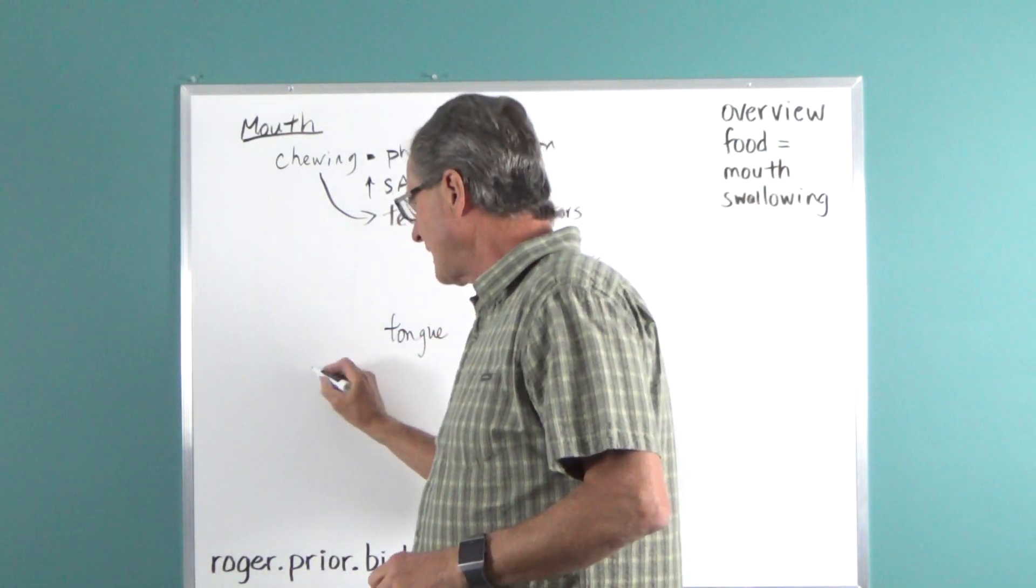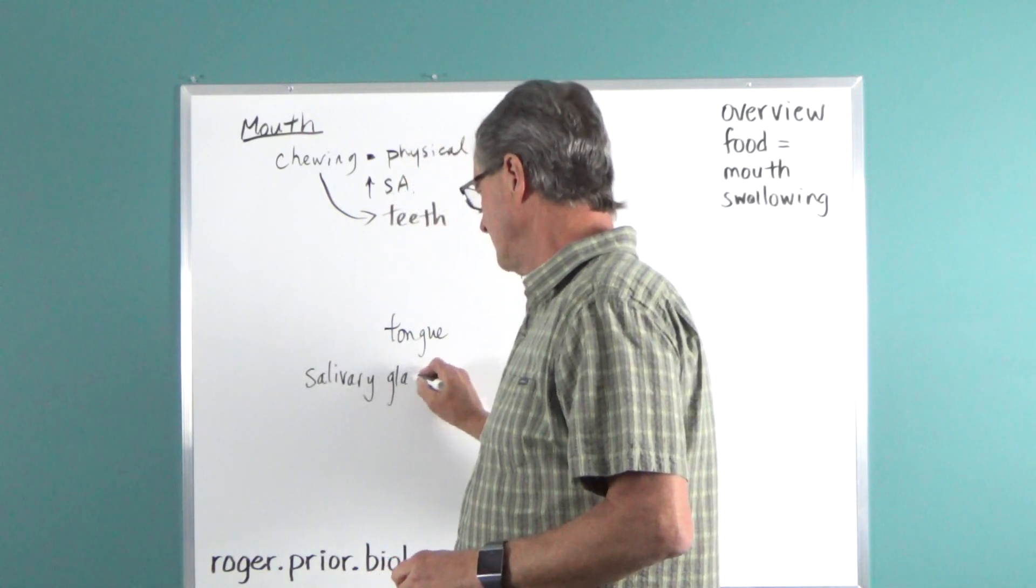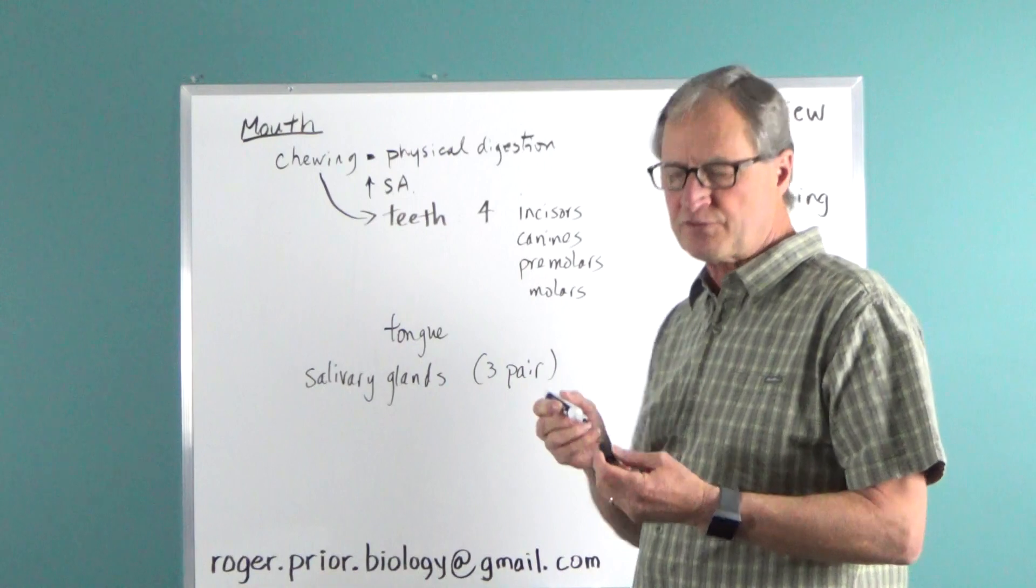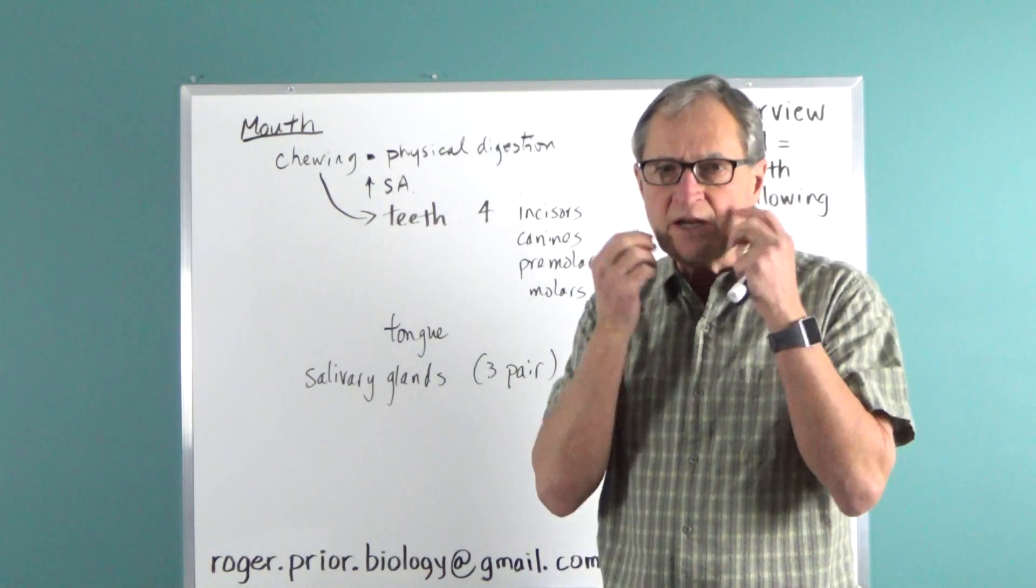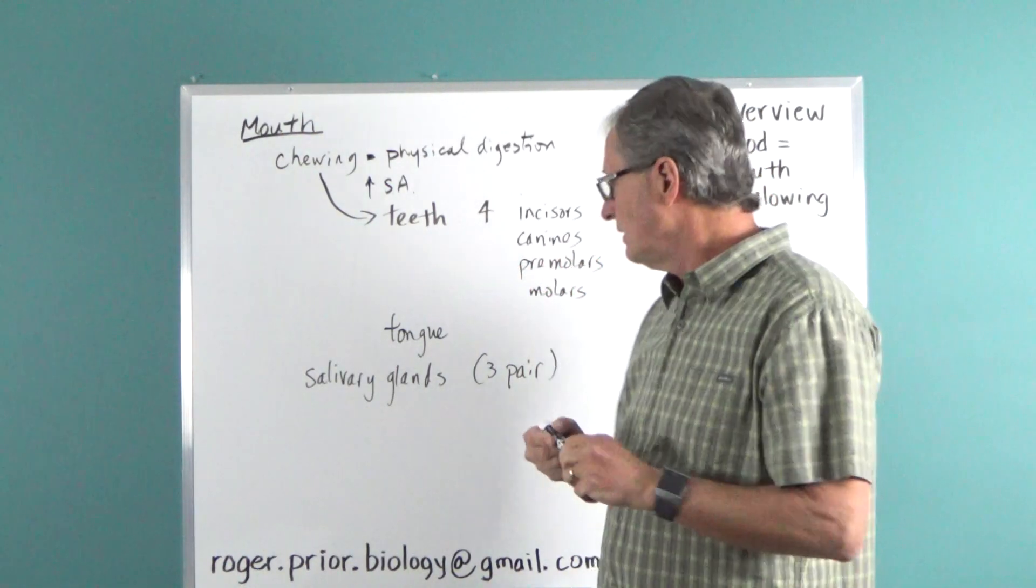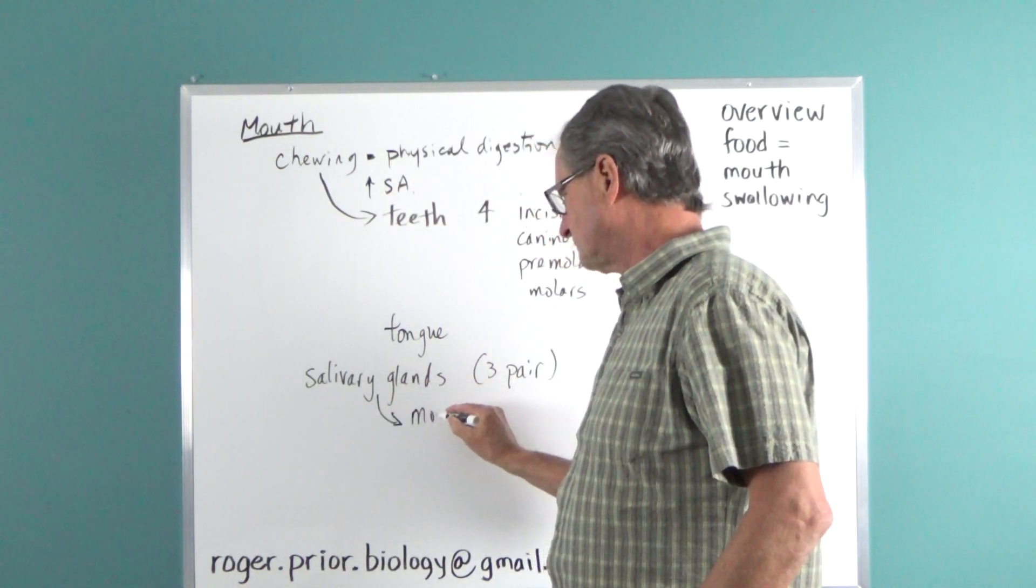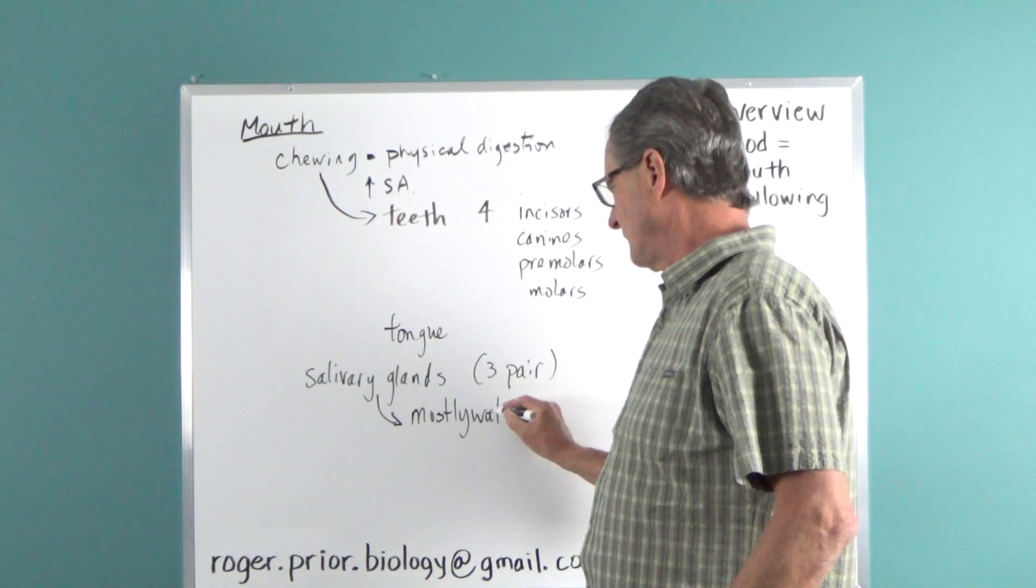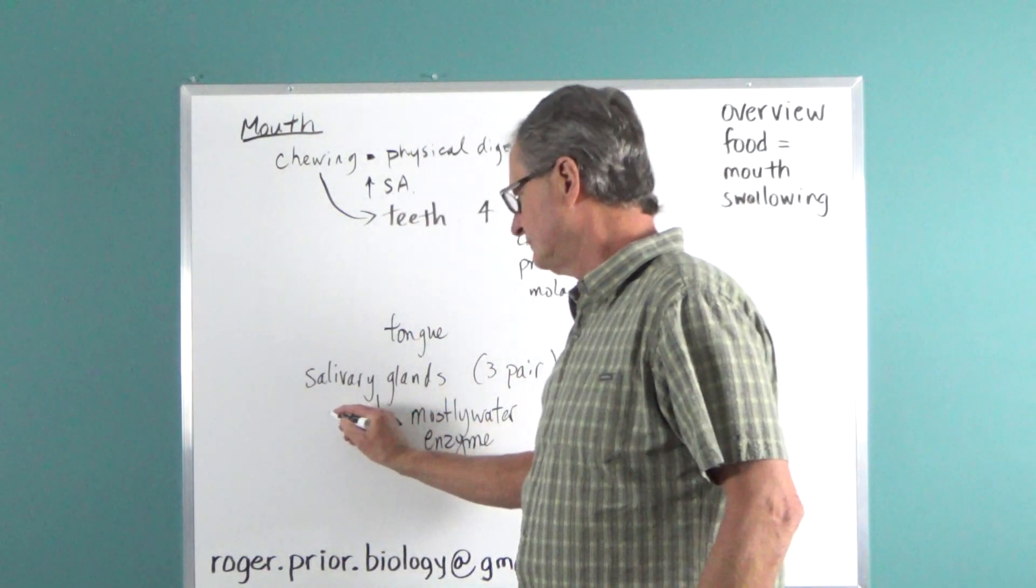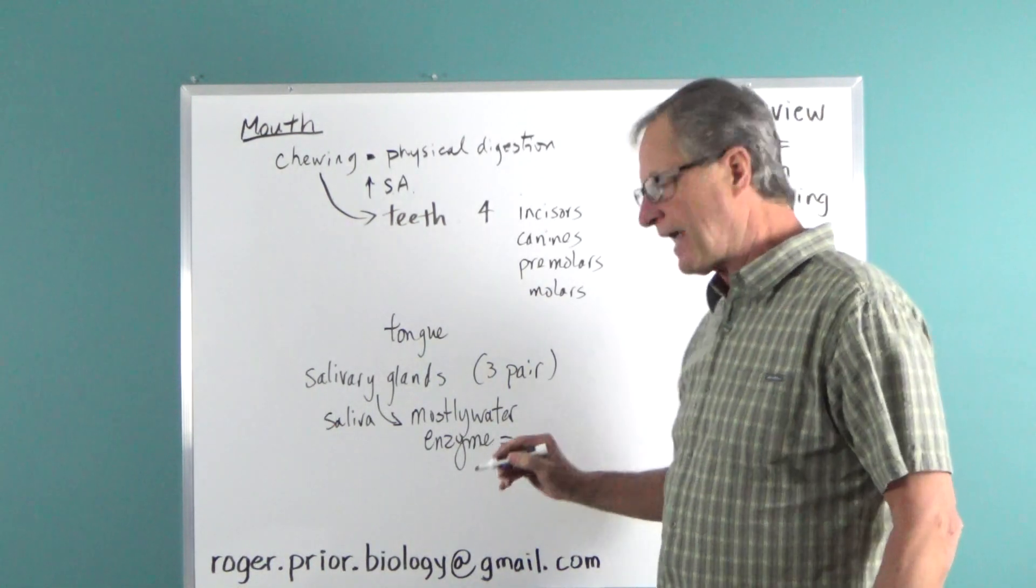There's also salivary glands. There's three pairs of salivary glands. A couple underneath the tongue here and there are other ones in the side of your mouth. And what they do is secrete saliva. Saliva is mostly water, but there's also an enzyme in it.